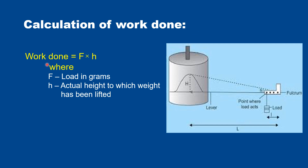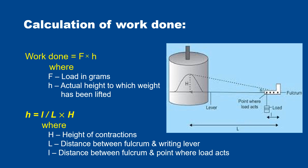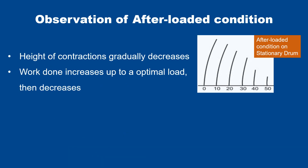Work done can be calculated as force multiplied by actual displacement. The actual displacement is the movement of the lever edge. This forms a right-angle triangle where the small edge (h) and capital edge (H) relate to the lengths. Using the proportion: small l divided by capital L equals small h divided by capital H, we can calculate small h. So work done can be calculated this way.